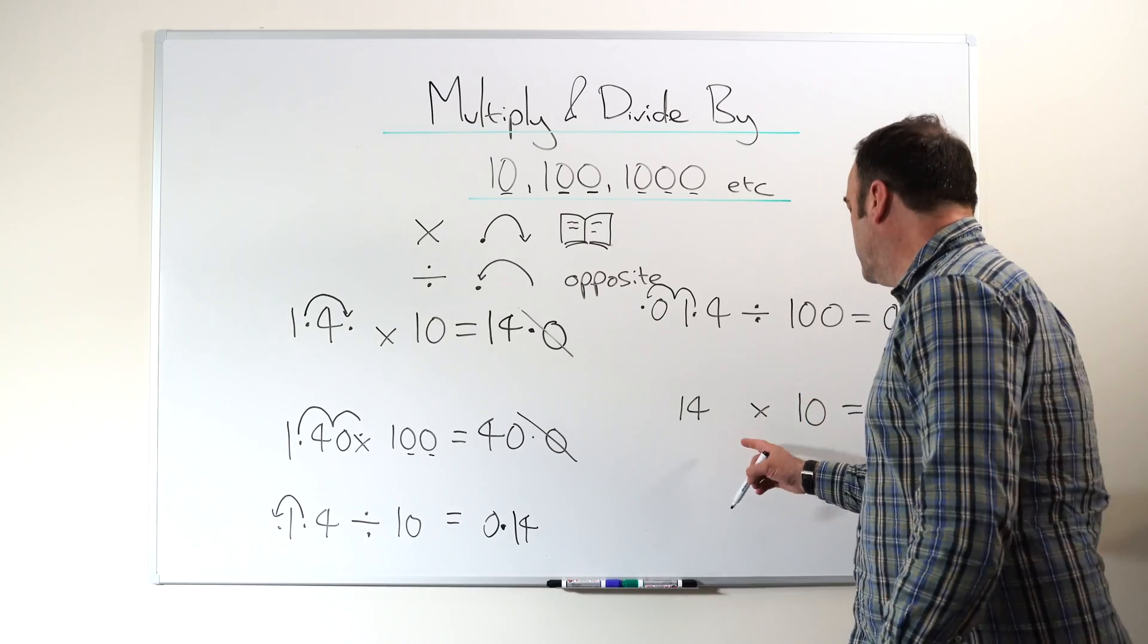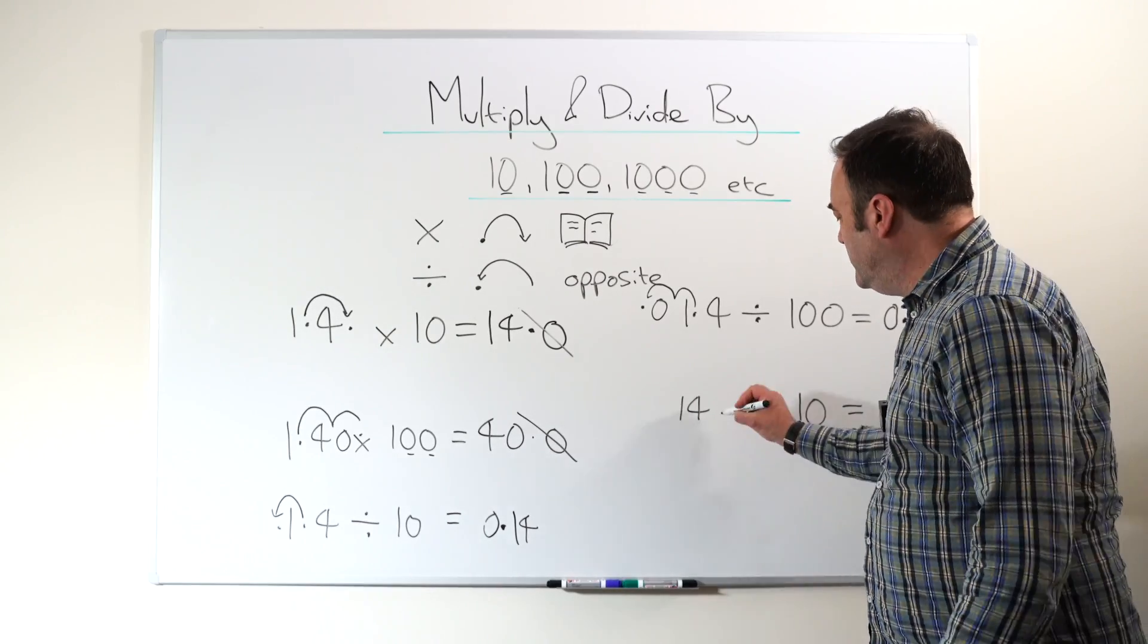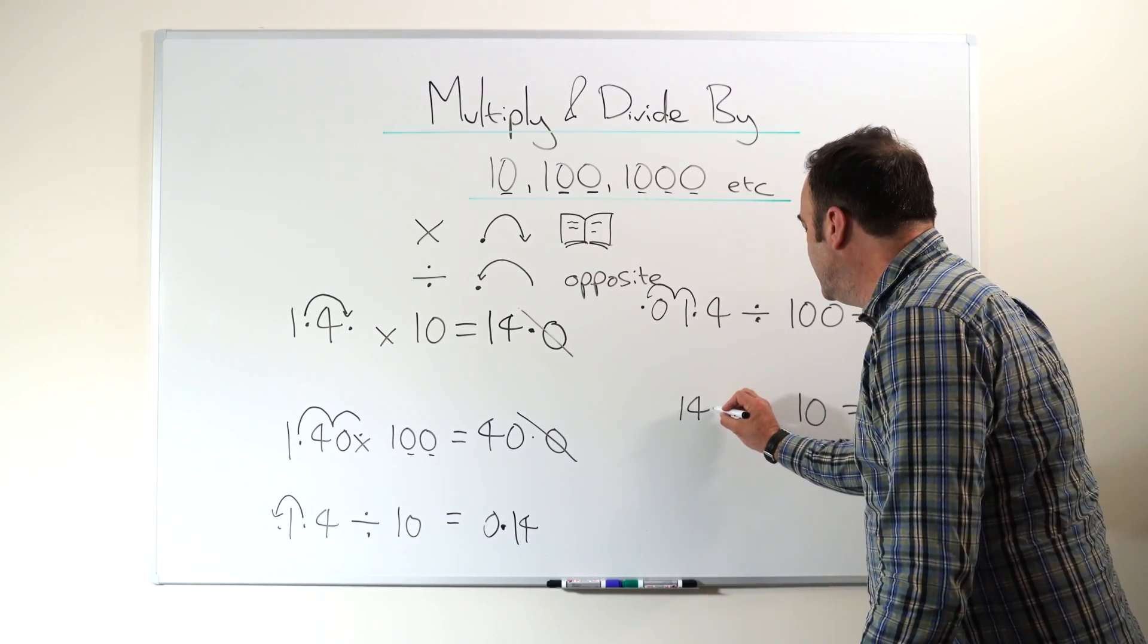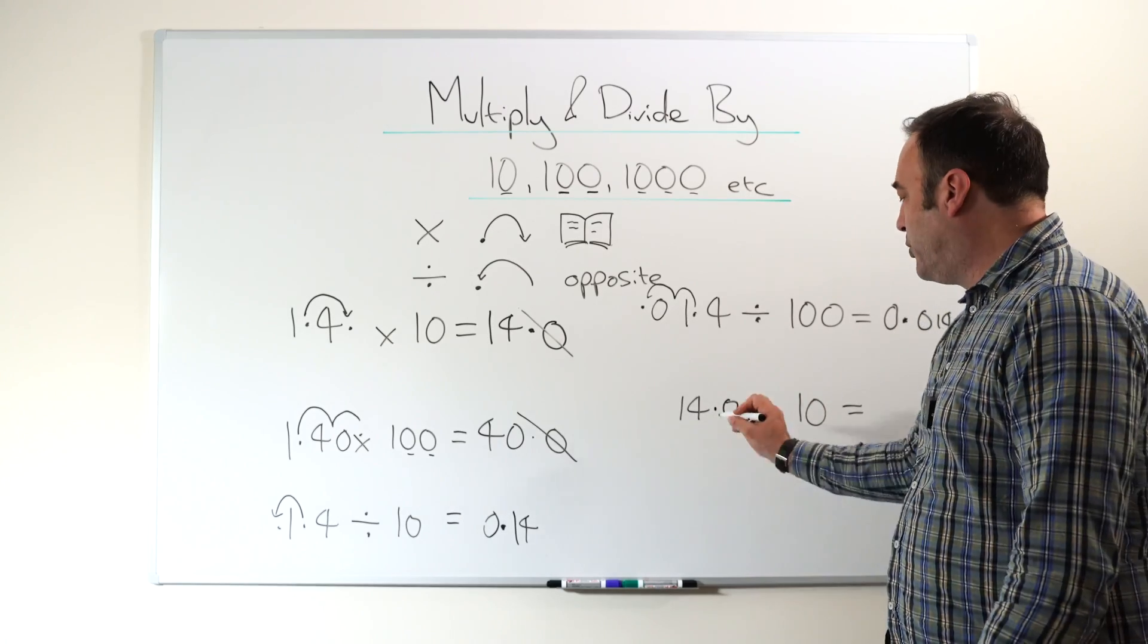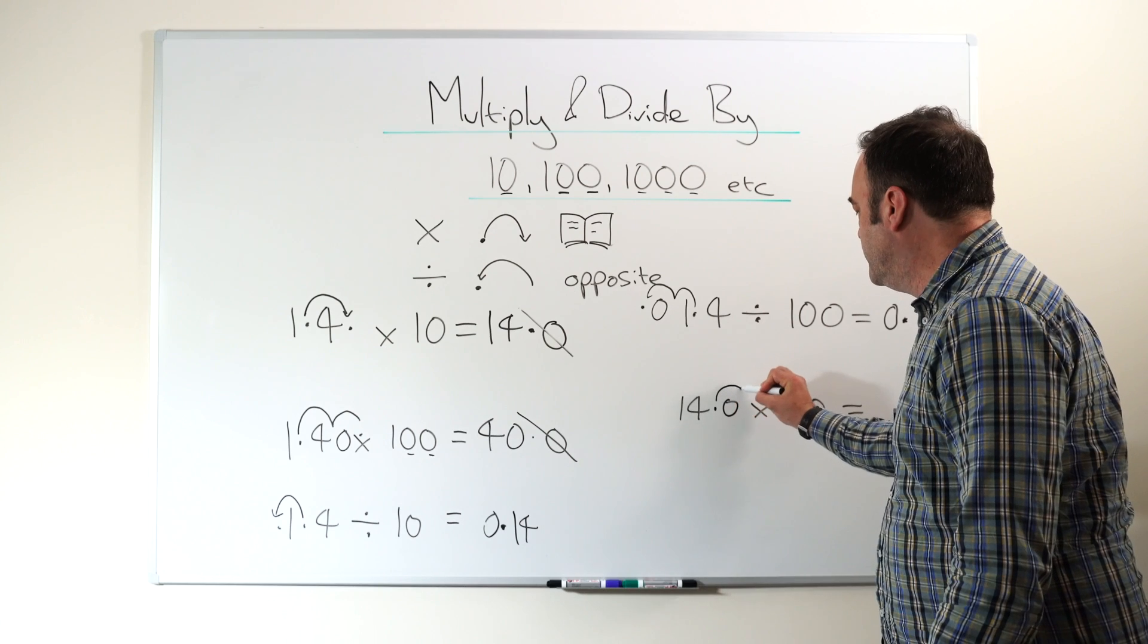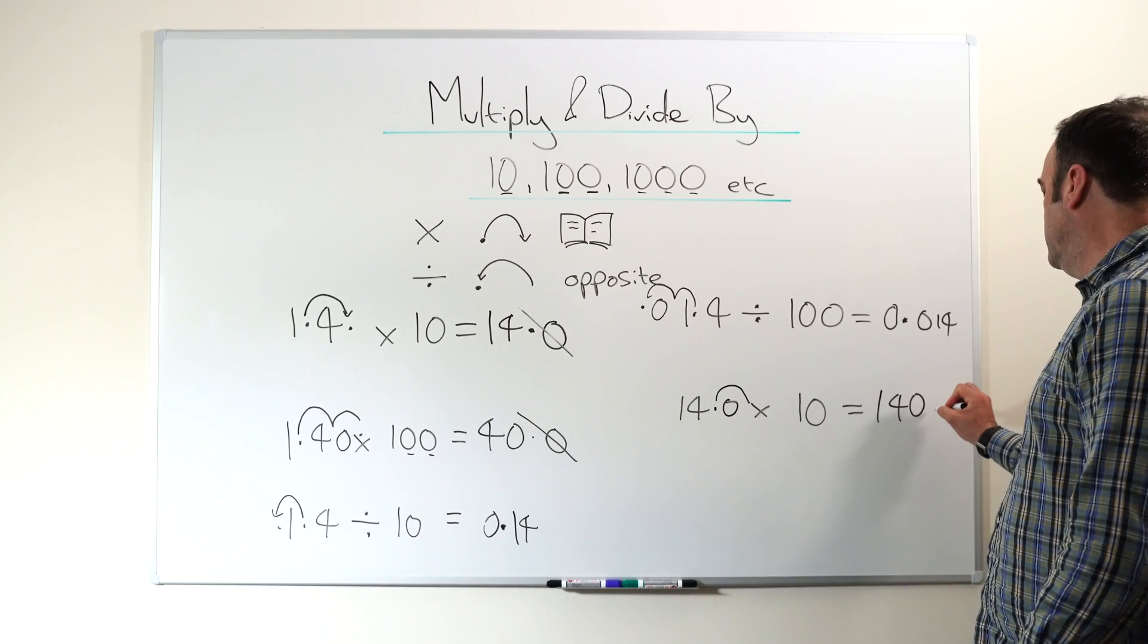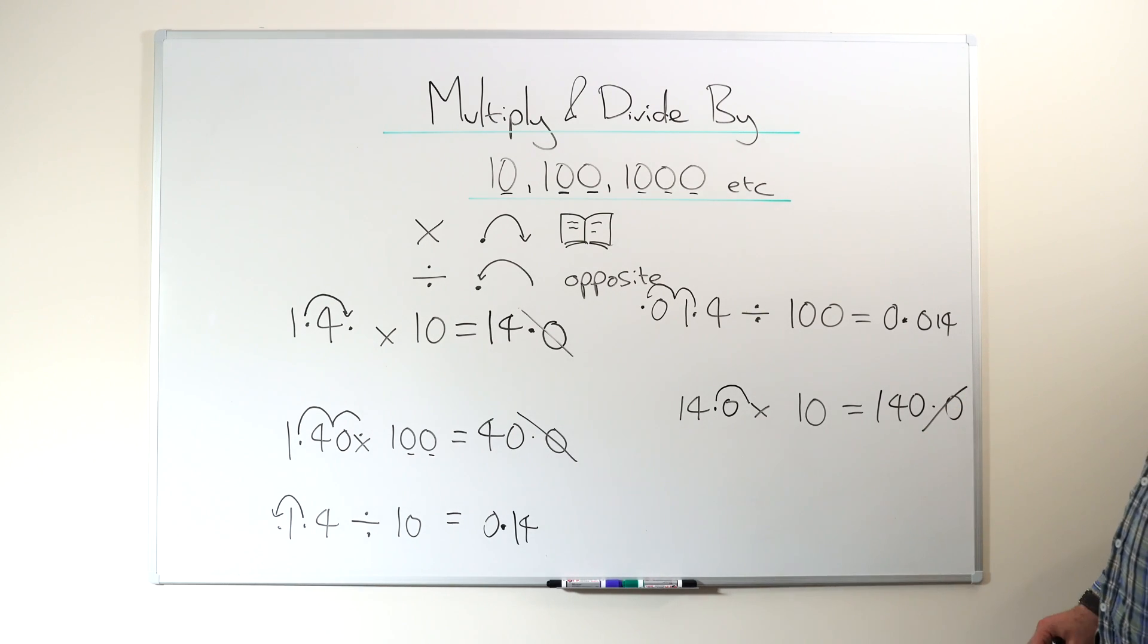Next thing, so nice easy one. Now we've got 14 times 10. Now when school kids are talking, where you just put zero on, but it's good to use this to explain why we do that. So 14 whole numbers are 14.0. So if it's times 10, what's actually happening is you're doing this. So it becomes 140.0, but of course it's just 140.